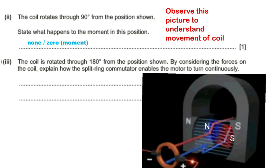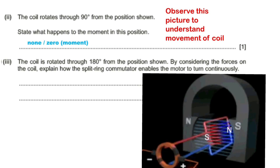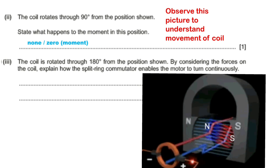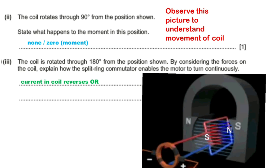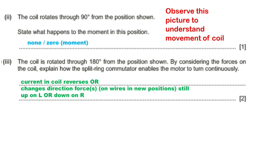The coil is rotated through 180 degrees from the position shown. By considering the forces on the coil, explain how the split ring commutator enables the motor to turn continuously. The split ring commutator reverses the current in the coil, or changes the direction of forces, so the left hand side still has an upward force and the right hand side a downward force — thus continuous movement is maintained.